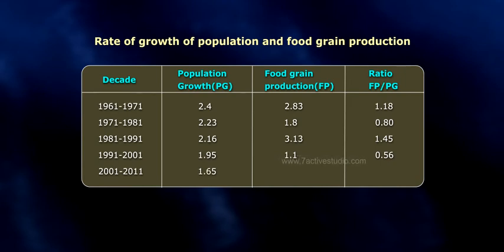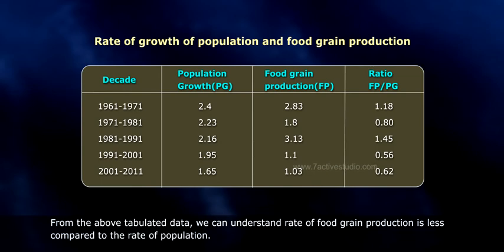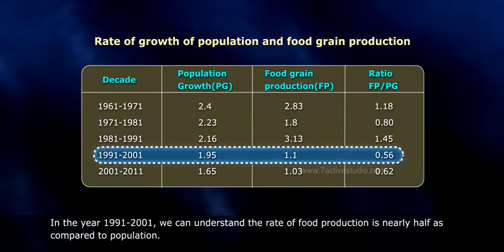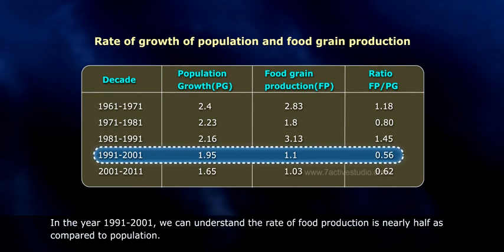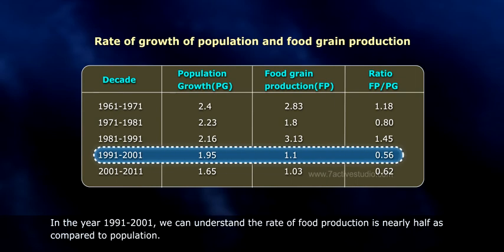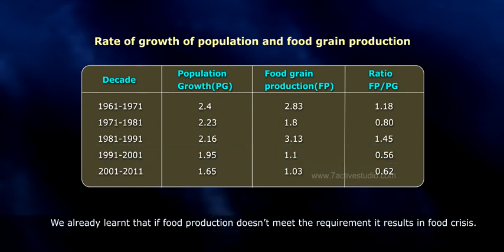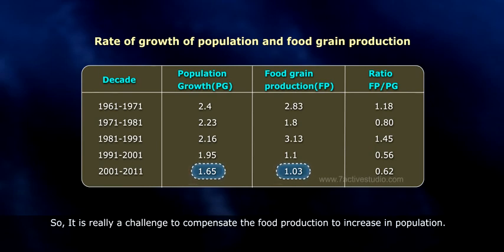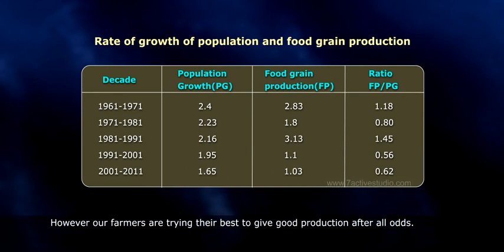From the above tabulated data, we can understand that the rate of food grain production is less compared to the rate of population growth. In the year 1991 to 2001, the food grain production ratio was 0.62, nearly half compared to population growth. We already learned that if food production doesn't meet the requirement, it results in a food crisis. So it is really a challenge to compensate food production for the increase in population. However, our farmers are trying their best to give good production despite all odds. Let us learn more about this in our next session.